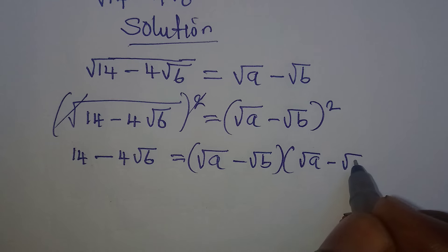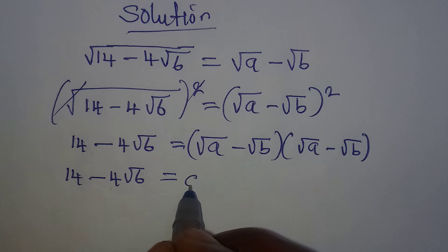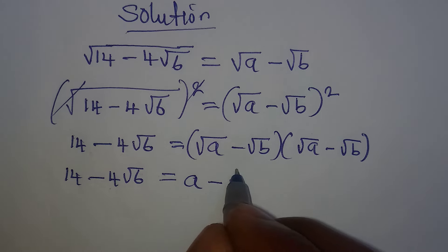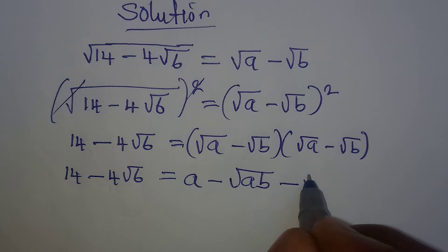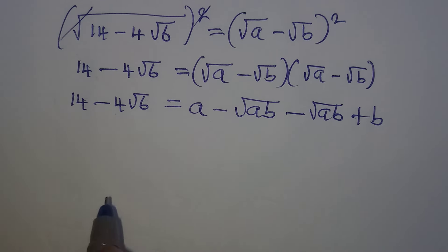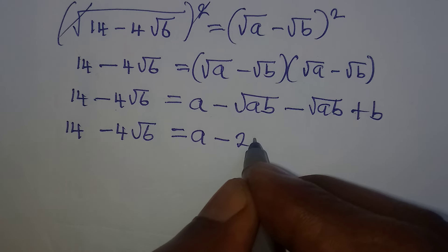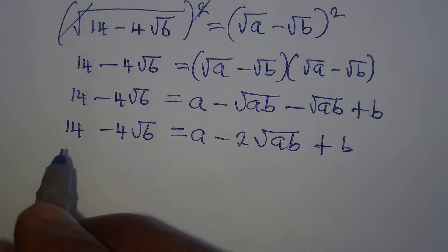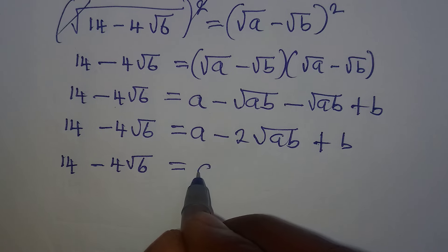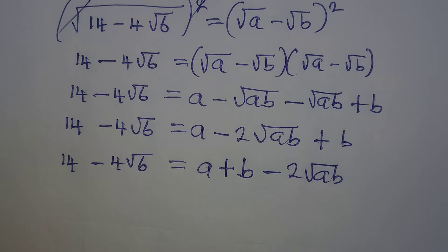Square root of a minus square root of b, closed. Now we have 14 minus 4√6 which is equal to this expansion. We need to show that square root of a minus square root of b, all squared, gives us a minus 2√(ab) plus b. So now we have 14 minus 4√6 equals, putting these two together, a plus b, then minus 2√(ab).